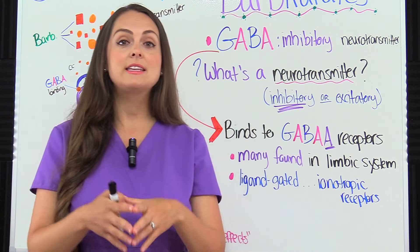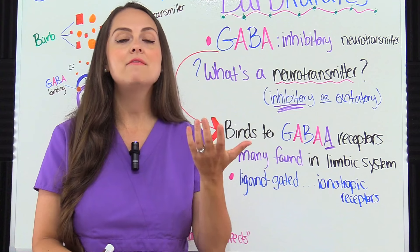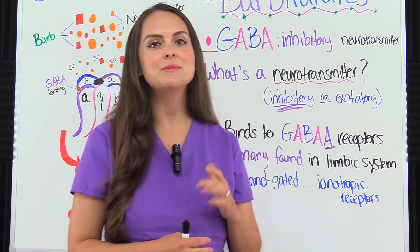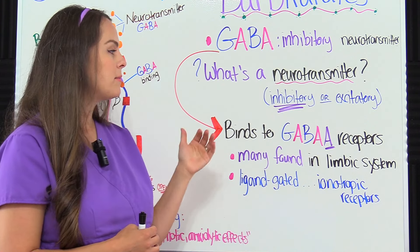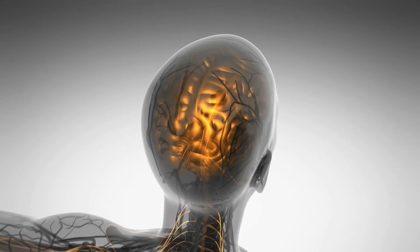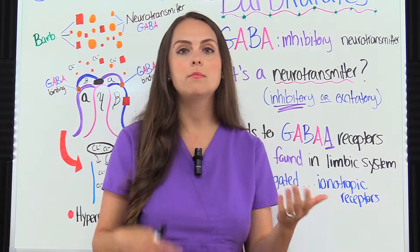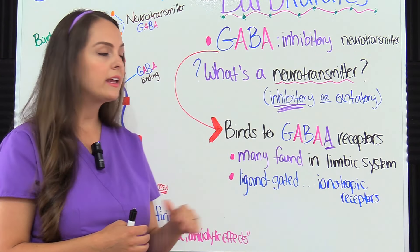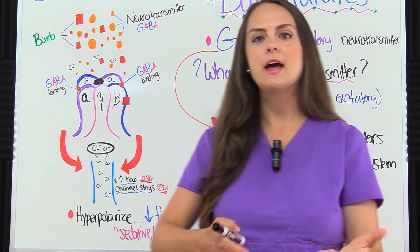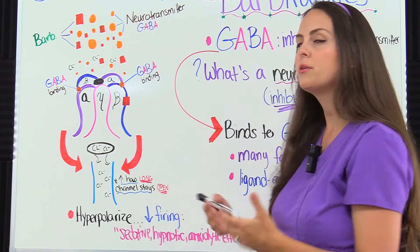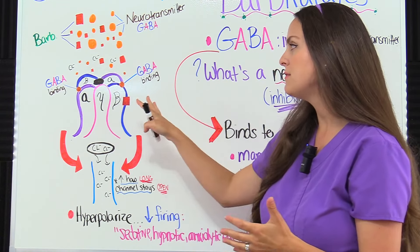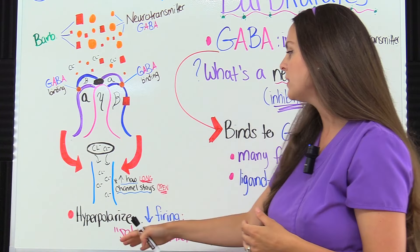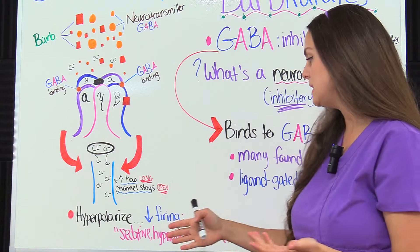Barbiturates work by affecting GABA receptors and amplifying the effects of the GABA neurotransmitter. There are GABA-A and GABA-B receptors; this lecture specifically covers GABA-A receptors. Many GABA receptors are found in the limbic system of the brain, which processes emotions and behavior. These are called ligand-gated or ionotropic receptors — when binding occurs, a channel opens allowing chloride ions to enter the cell, hyperpolarizing it and decreasing its firing potential.